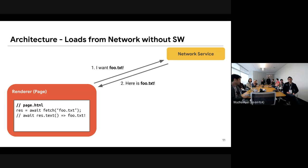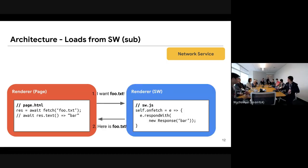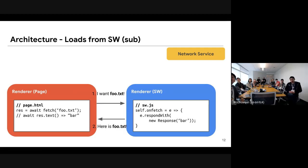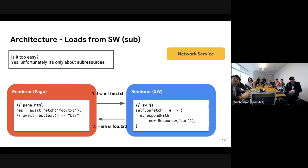If you have a service worker, the renderer is connected to the service worker through Mojo IPC or Mojo connection. So fetch('foo.txt') goes to the service worker, and then the service worker has a fetch handler. The service worker responds to the request with a response 'bar', so the result of the page will be 'bar'.